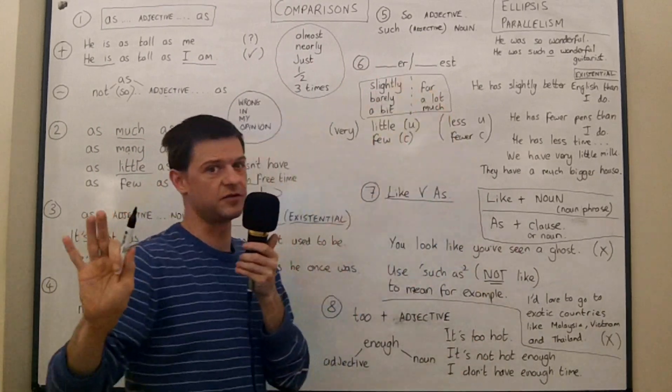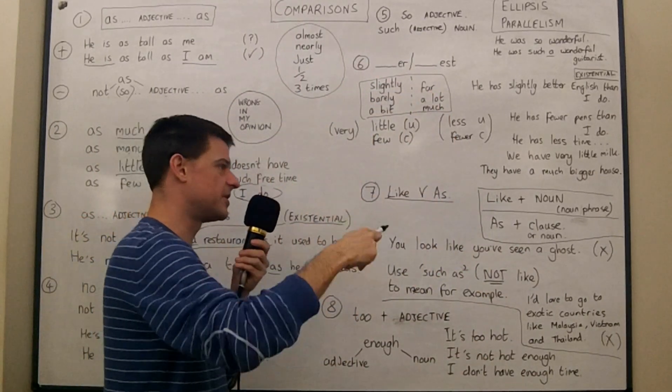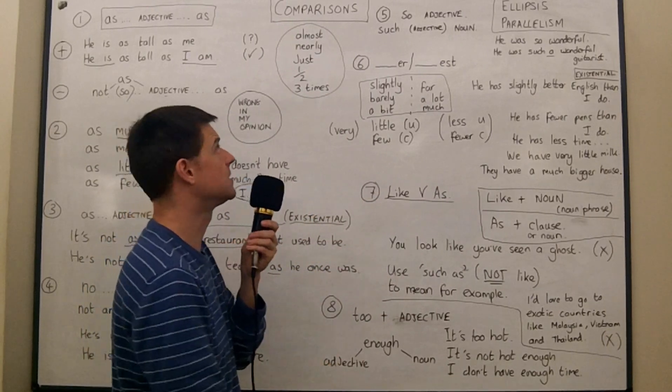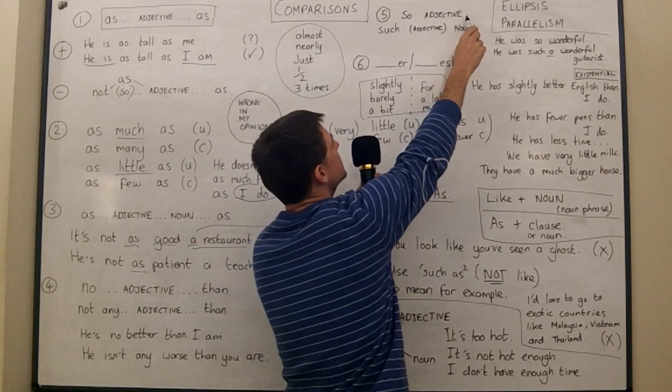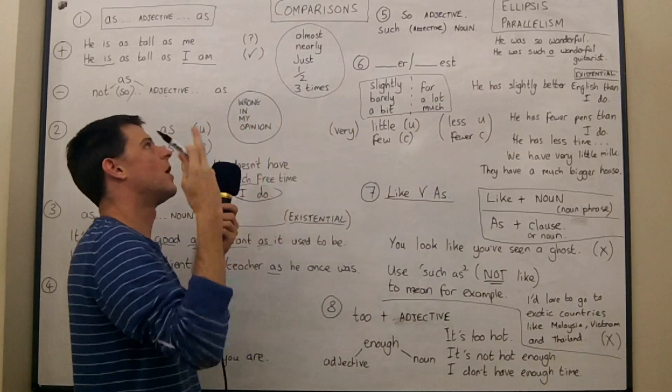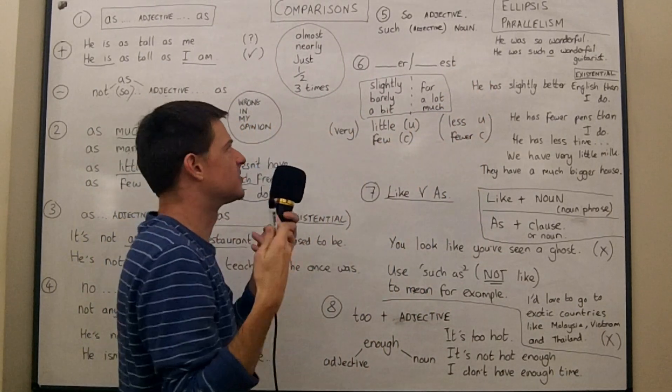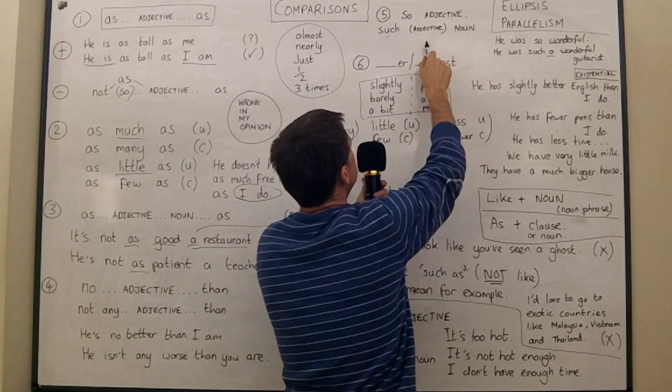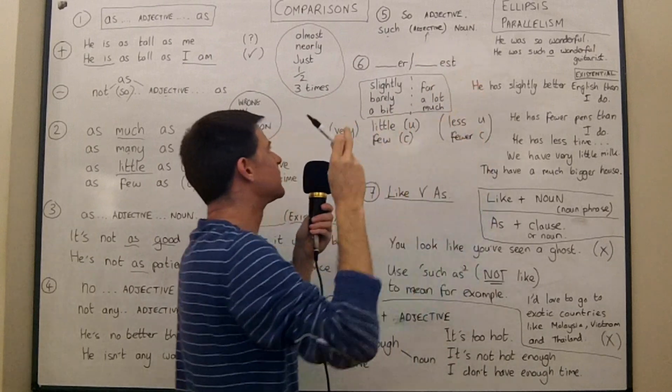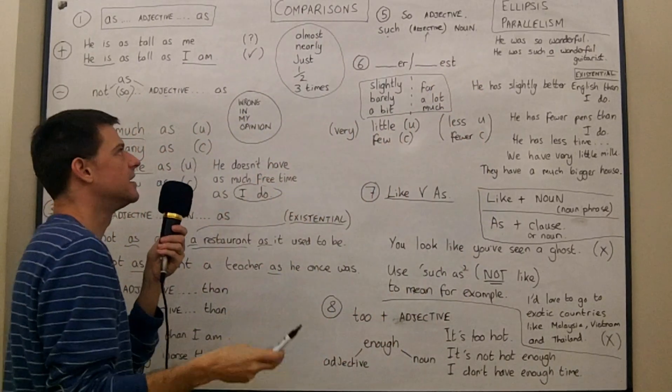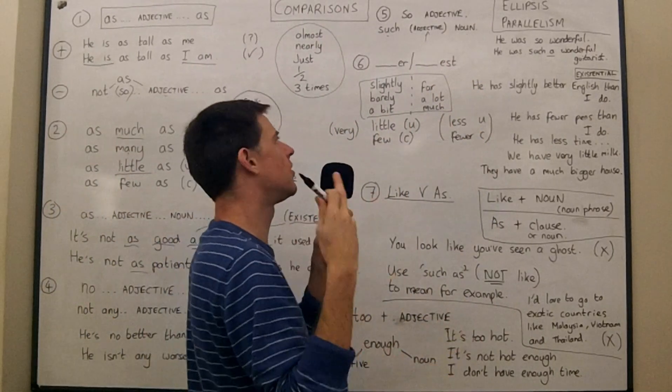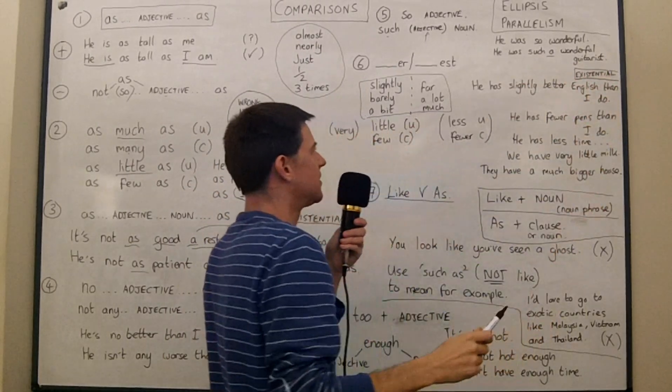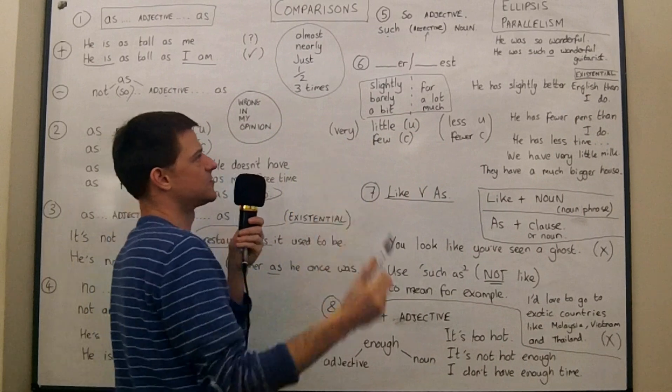We use, I've done another lesson on this, by the way. So please, I'll put it on here as a link. Please go to that lesson if you want more information. But we use so plus adjective full stop. That was so wonderful. That was so great. That was so awful. But we use such plus a noun, even if it's got an adjective in between. So that was such a wonderful hotel. That was such a great holiday. He was so wonderful. He was such a wonderful guitarist. So that's the difference between those two.